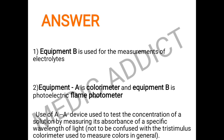The flame photometer is mainly used for measurement of serum electrolyte values. The colorimeter — the other instrument — is a device used to test the concentration of a solution by measuring its absorbance at a specific wavelength of light. It is not to be confused with the tri-stimulus colorimeter, which is used to measure colors in general.